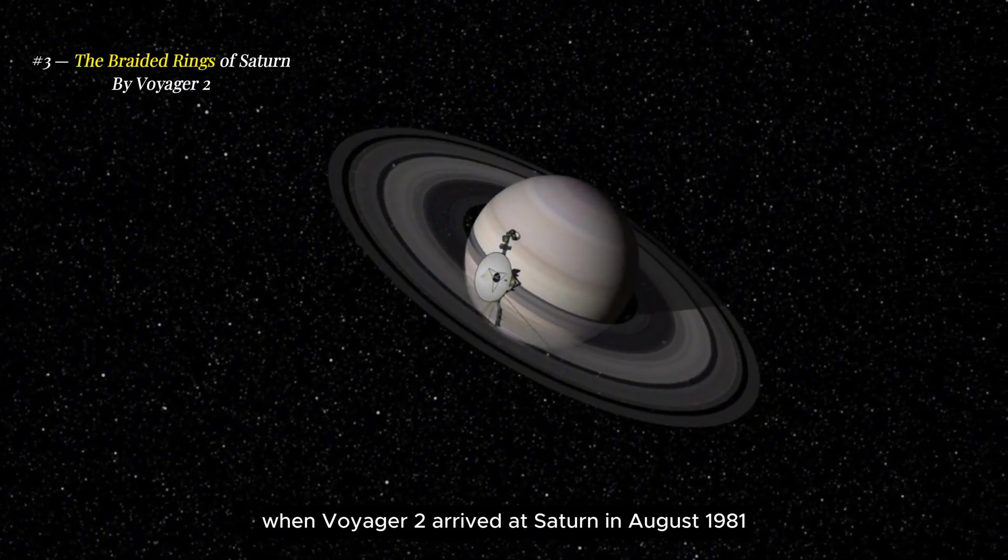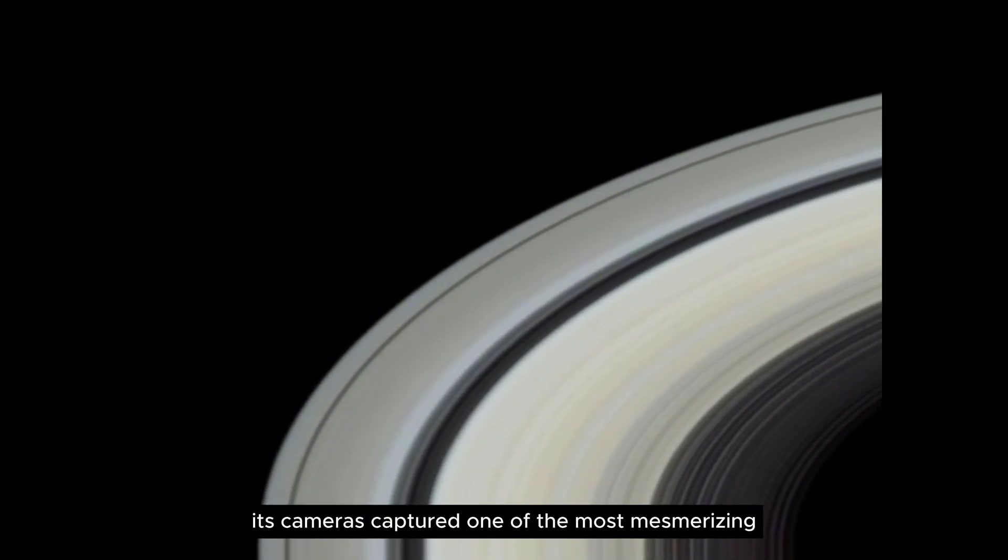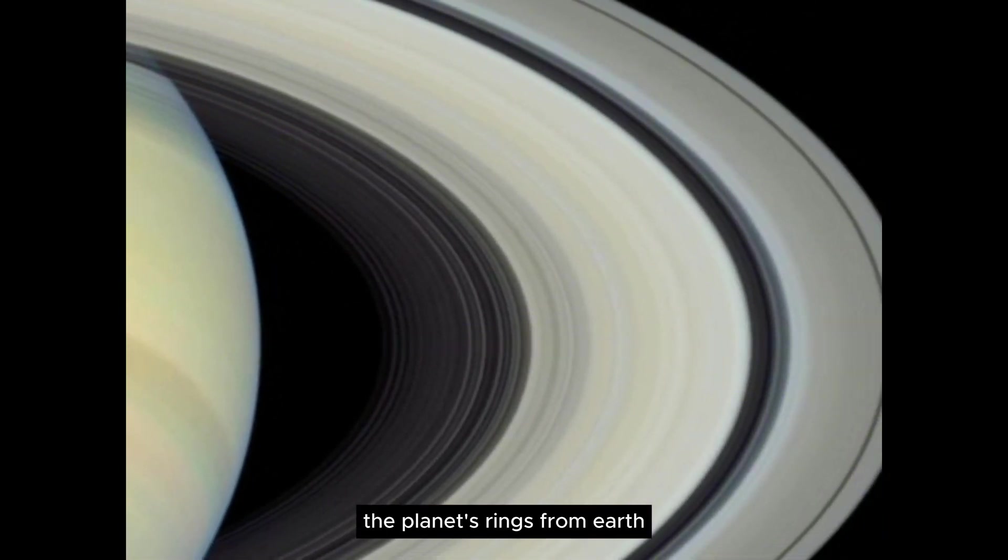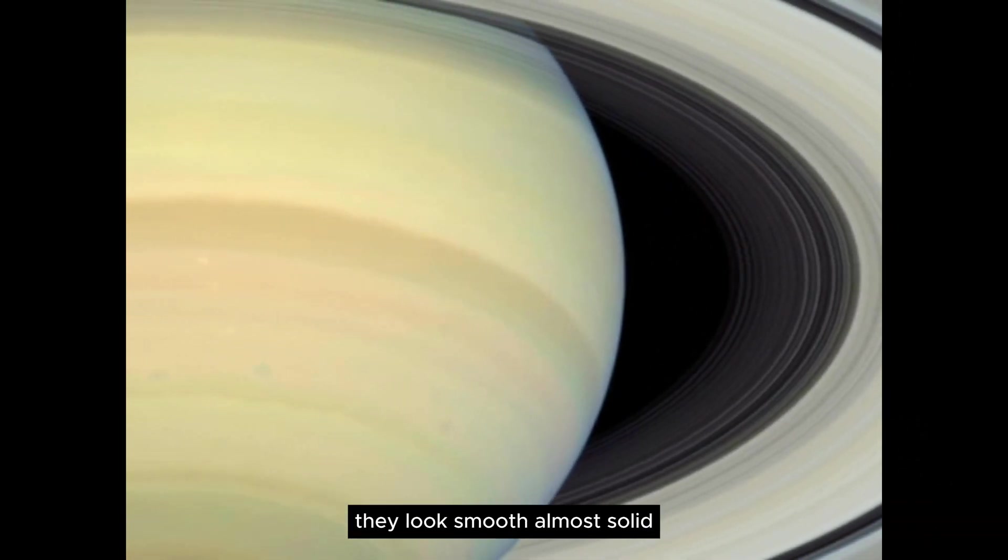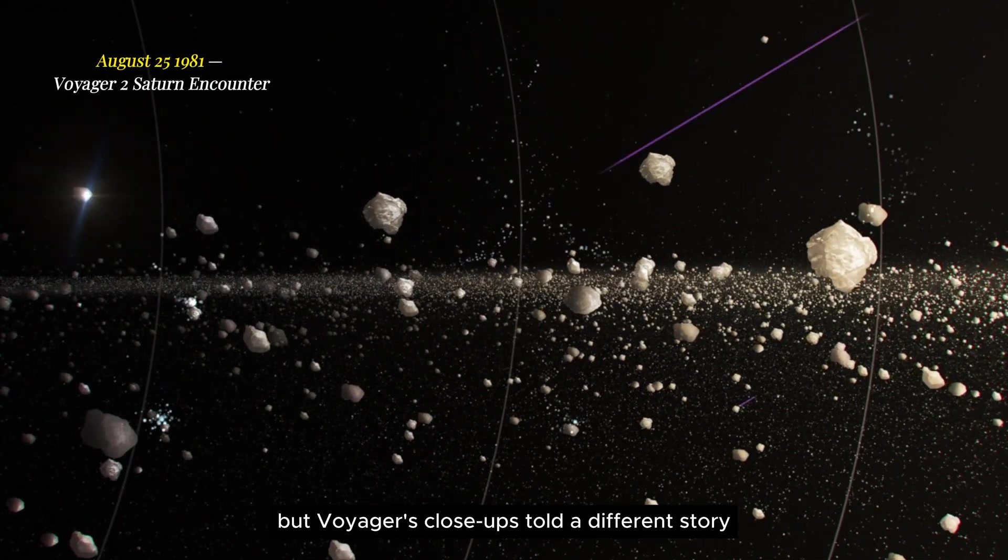When Voyager 2 arrived at Saturn in August 1981, its cameras captured one of the most mesmerizing sights in the solar system, the planet's rings. From Earth, they looked smooth, almost solid. But Voyager's close-ups told a different story.